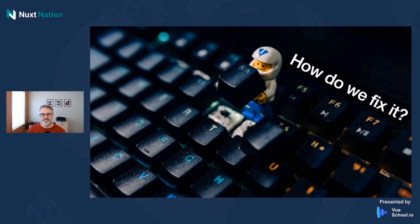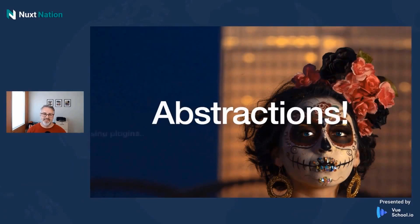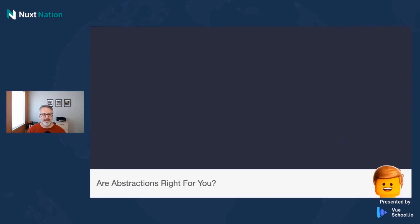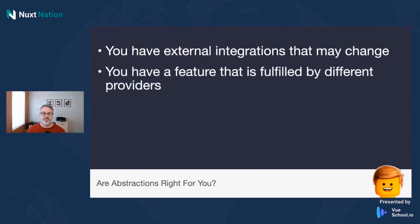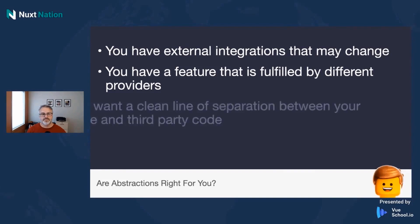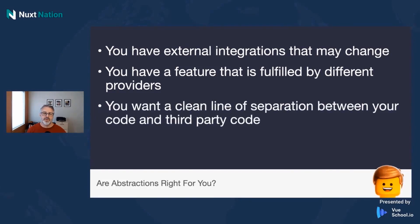So how do we fix it? Abstractions, using plugins. When would you want to use abstractions? First, if you have external integrations that may change in the future and you want to protect the rest of your code base from those changes. Also, if you have a feature that's fulfilled by different providers — for our code base running eight sites, a given chat provider may change between two individual sites. Abstractions help us fulfill the feature from an external standpoint while leaving the implementations inside a plugin. And lastly, you want a clean line of separation between your code and third party code.